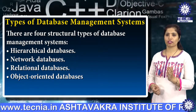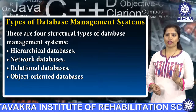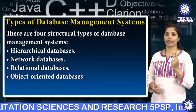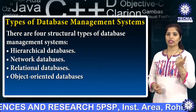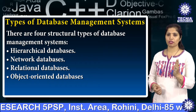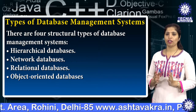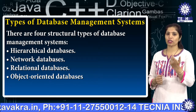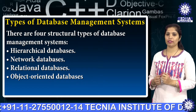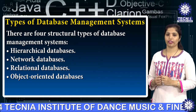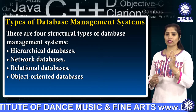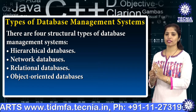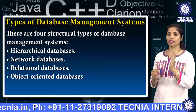The second criteria used to classify DBMS is the number of users supported by the system, like the single user system and the multi-user system. The single user system supports only one user at a time and is mostly used with personal computers. The multi-user system includes the majority of DBMS and supports multiple users concurrently. Based on these different criteria, the database is divided into various types.